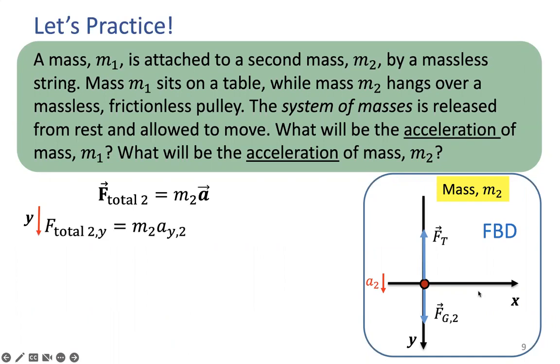We apply the F equals MA. We have the acceleration downward. And force of gravity on mass 2 is downward, but tension force is upward. That's why this negative sign. There we go.